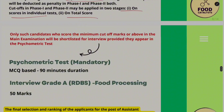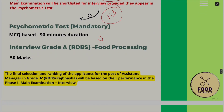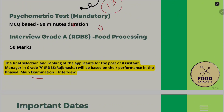Only candidates who score above the minimum cutoff marks will be shortlisted for the mains and then the interview and psychometric test. The psychometric test is mandatory, MCQ-based, and 90 minutes long. The interview carries 50 marks. Importantly, the psychometric test is only a qualifying test and is not counted in the final score. The final selection is based only on the mains examination and interview combined.